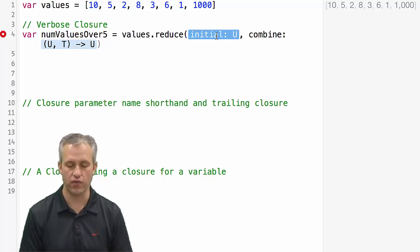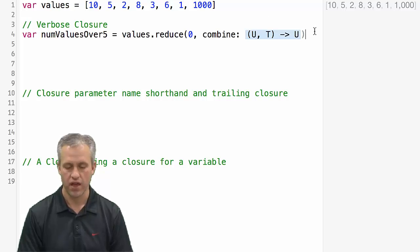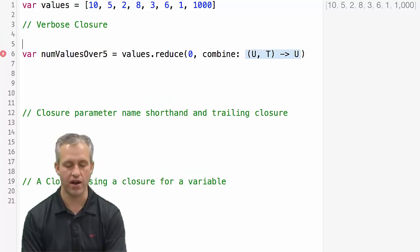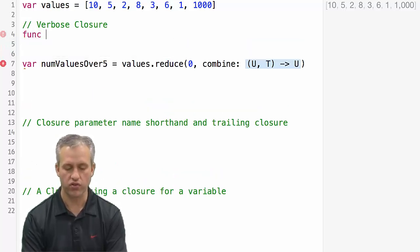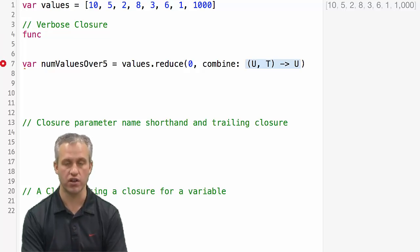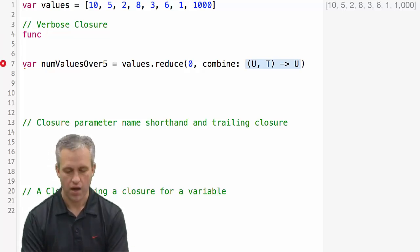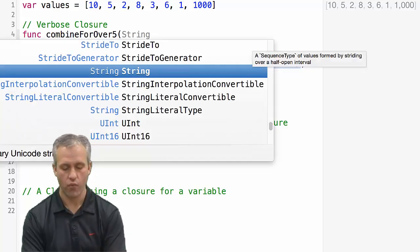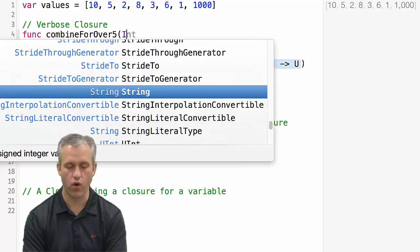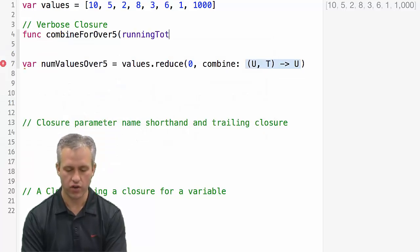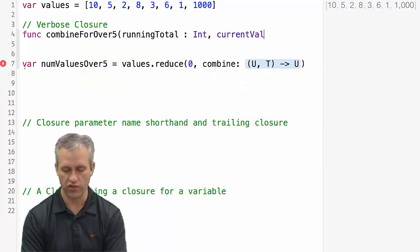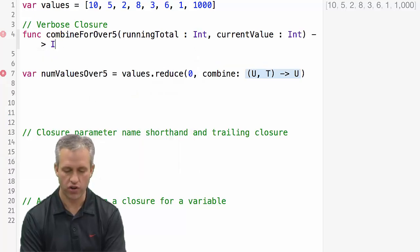So this is our goal. We're going to count the values that are over five. So our initial value is just going to be zero. And then what we want to do is we want to pass in a function to do this combine operation. What we're going to start with is we're going to start with actually making a separate function and then passing it in. I'm going to call this function combine for over five. So it's a function. It's going to receive two parameters. What I'm going to choose to do is I'm going to work only with ints. So I'm going to call them running total, which is an int, and then I'm also going to call it a current value, which is an int. And this function needs to also return an int.